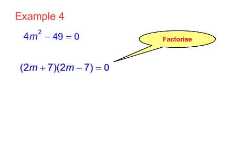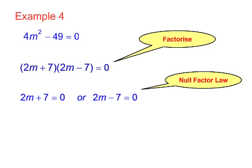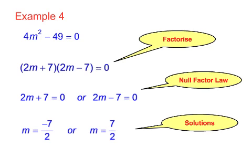Again, using the null factor law, 2m plus 7 equals 0, 2m minus 7 equals 0, from which m equals minus 7 over 2 or m equals plus 7 over 2.